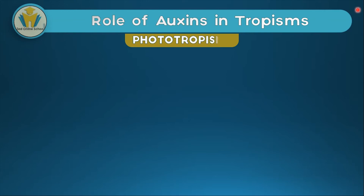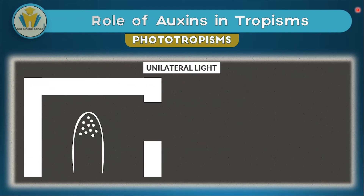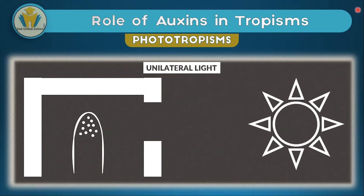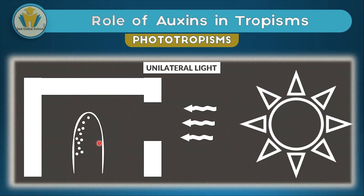One of the most common applications of the auxin theory is the role of auxins in phototropism with unilateral light — light from one side. In such a setup, a growing shoot or coleoptile is placed in a box where light only comes from one side, like sunlight coming through a window. The shoot receives light on its right side only, so auxins move to the darker left side. The left side then grows faster than the right, causing the shoot to bend towards the light source.